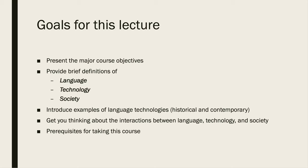I'd like to begin by describing the goals for this lecture. We will be presenting the major course objectives, providing brief definitions of the major terms language, technology, and society. I will introduce examples of language technology both historical and contemporary, and I want to get you thinking about the interactions between language, technology, and society. Finally, we're going to discuss the prerequisites required for you to be enrolled in this course.